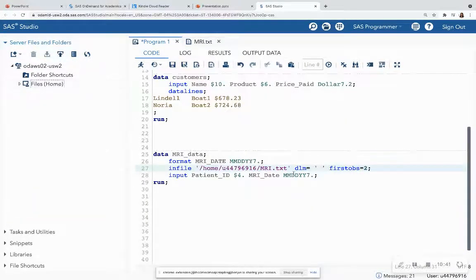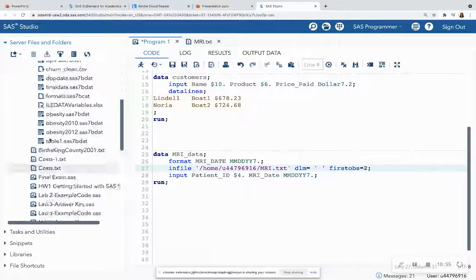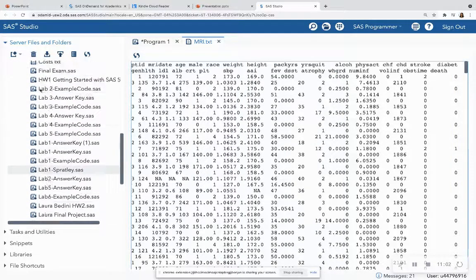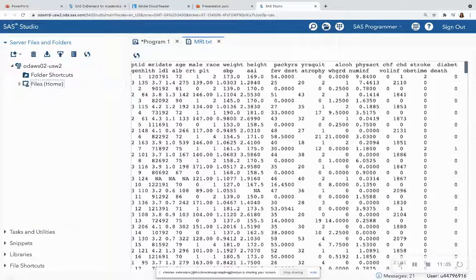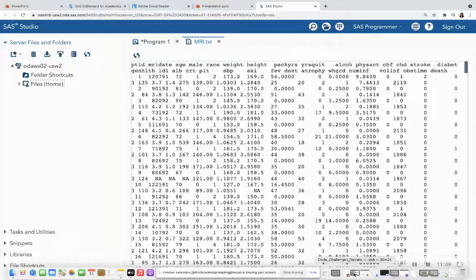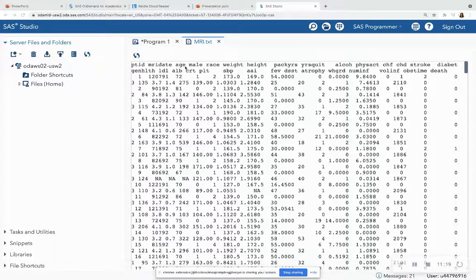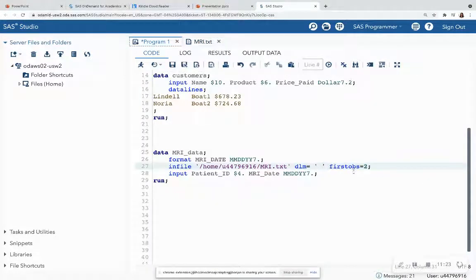And that is the path that you would put in your infile statement. So I have already uploaded this MRI.txt, and I have the path within SAS On Demand for Academics where this text file is located. DLM just means delimiter. So I noticed that when I look at this file, it has spaces between the columns. And I also recommend opening up this text file on your computer so you can actually see how it is formatted.